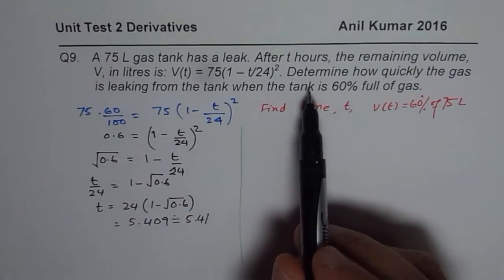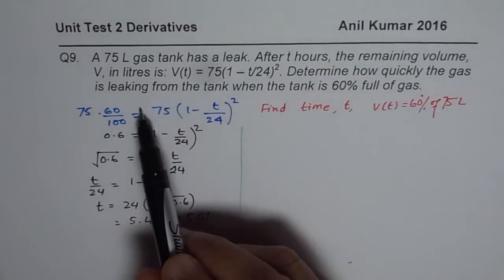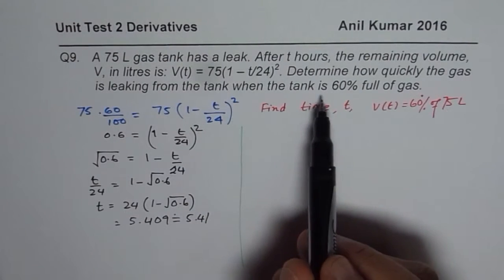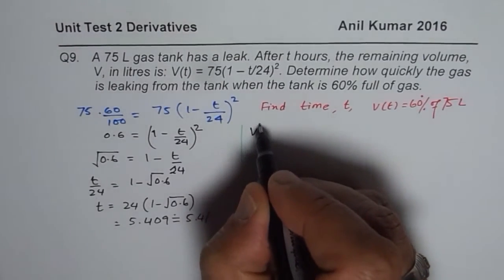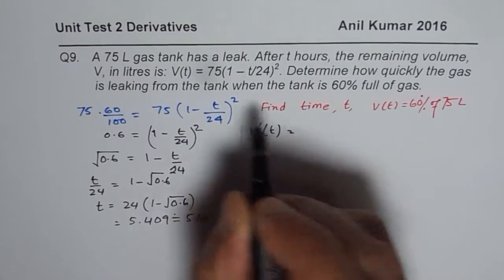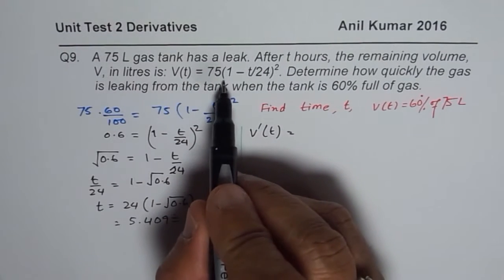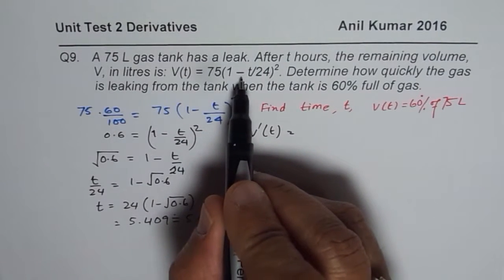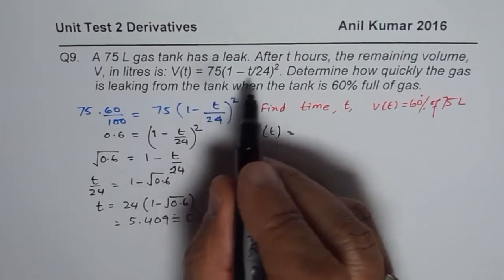Now let us see what we need to find. The second half of this question is, determine how quickly the gas is leaking from the tank when tank is 60% full. So that is rate of change. So we need to find V dash T. So let us differentiate this. So the equation is 75 times 1 minus T over 24 whole square. So if you differentiate that,